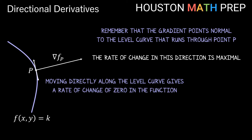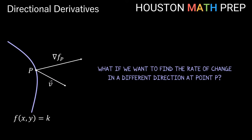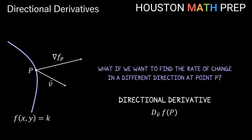So we know these things about instantaneous rates of change in these directions for our function. The big remaining question then is: what if we want to find the rate of change in a different direction than these directions at point p? In my picture here, let's say I want to know the instantaneous rate of change in the direction of this vector v. That's what we mean when we talk about a directional derivative — it's the rate of change of a function at a particular point p in the direction of some vector v. We have a common notation: capital D with the direction we want to use as a subscript, and the rest tells us it's evaluated at point p on our function.